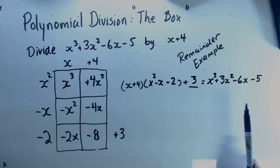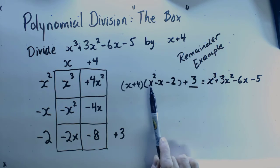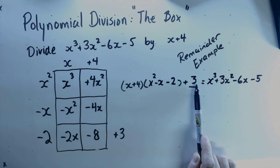So I can say that this is equal to (x + 4)(x² - x - 2) + 3.